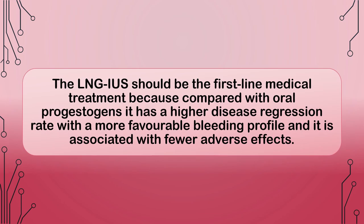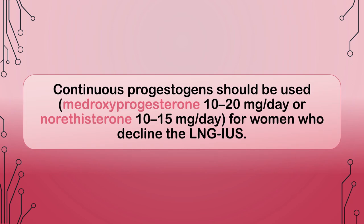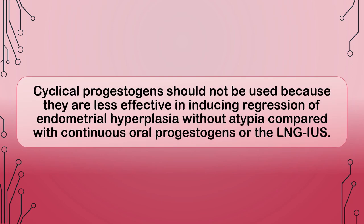The LNG-IUS should be the first-line medical treatment because, compared with oral progestogens, it has a higher disease regression rate with a more favorable bleeding profile and is associated with fewer adverse effects. Continuous progestogens such as medroxyprogesterone 10 to 20 mg per day or norethisterone 10 to 15 mg per day should be used for women who decline the LNG-IUS. Cyclical progestogens should not be used because they are less effective in inducing regression compared with continuous oral progestogens or the LNG-IUS.